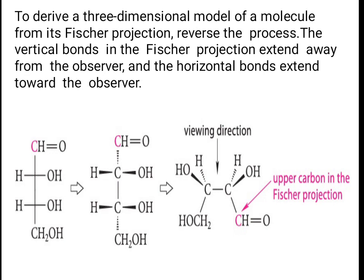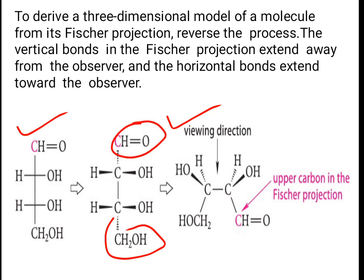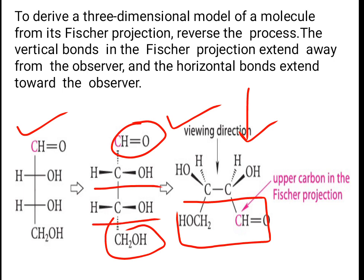To derive a three-dimensional model from a Fisher projection, reverse the process. The vertical bonds in the Fisher projection extend away from the observer and the horizontal bonds extend toward the observer. From this Fisher projection you get an eclipsed conformation: the vertical bonds are away from the observer, while the horizontal bonds are towards the observer — one is in front and the other in back, but both are above the viewing direction.